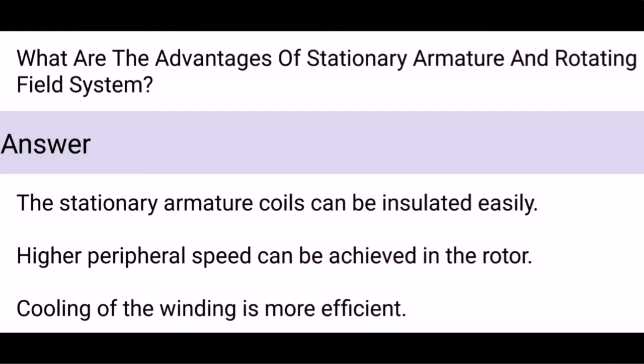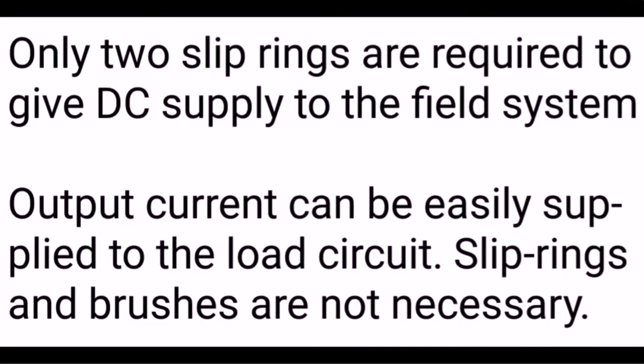What are the advantages of the stationary armature and rotating field system? The stationary armature coils can be insulated easily. Higher peripheral speed can be achieved in the rotor. Cooling of the winding is more efficient. Only two slip rings are required to supply DC to the field system. Output current can be easily supplied to the load circuit, and slip rings and brushes are not necessary.